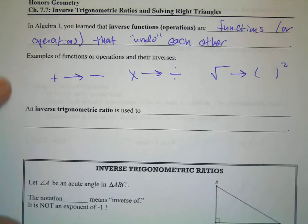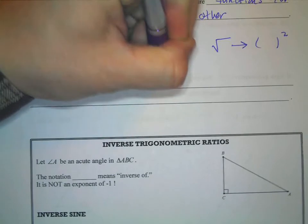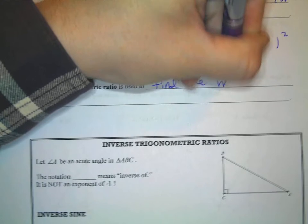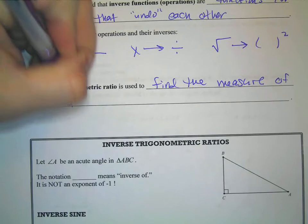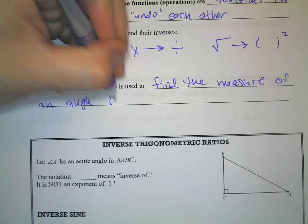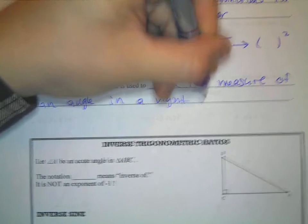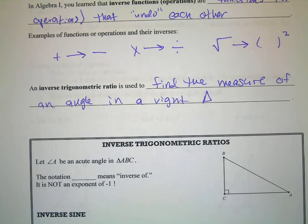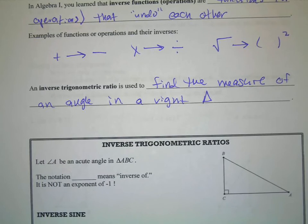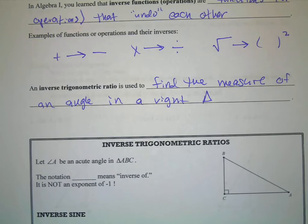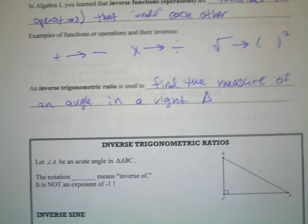An inverse trigonometric ratio is used to find the measure of an angle. Previously, we used cosine, tangent, or sine of the angle to find the length of a missing side. Now we're going to use the same information but find the missing angle instead. It still involves your calculator, but you'll be using a different button.